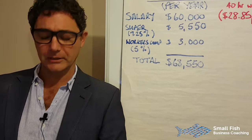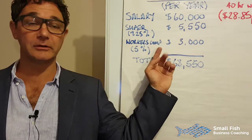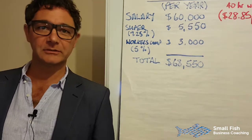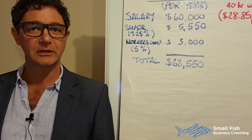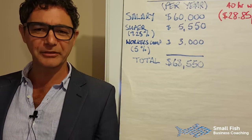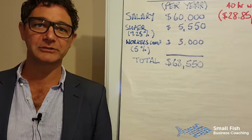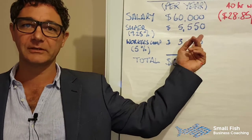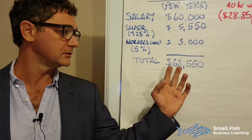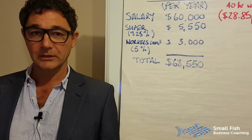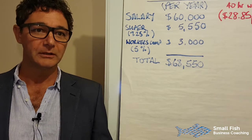Let's get into the calculation. I'm going to work out the cost of an employee per hour that you charge. Starting with a permanent employee on $60,000 a year salary — divide that by 40 hours a week and you get $28.85 an hour. But you've got to add super at 9.25%, that's $5,550, plus workers comp at about 5%, that's $3,000. So before you've even started, you're already at $68,550 — about 12% more than you thought.